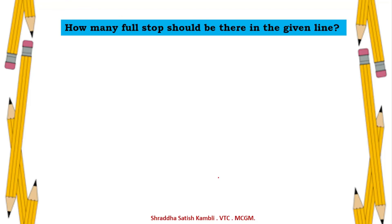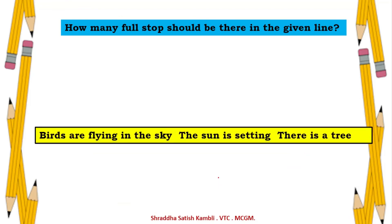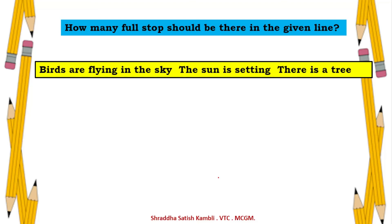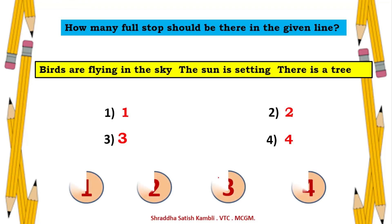Ninth example: put the full stop at the proper place in — 'Birds are flying in the sky. The sun is setting. There is a tree.' — one full stop after 'sky', one after 'setting', and one after 'tree'. Tenth example: how many full stops should be there in that line? The answer is option 3 — three full stops.